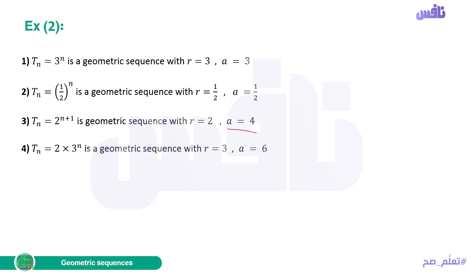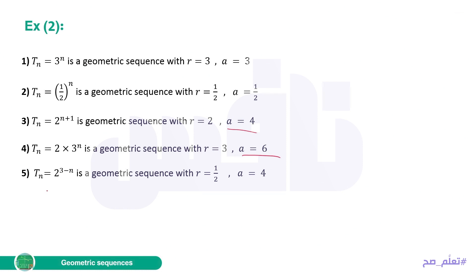For Tn = 2 · 3^n, R equals 3 (the base). To find A, substitute n=1: 2 · 3^1 = 2 · 3 = 6. So A equals 6.